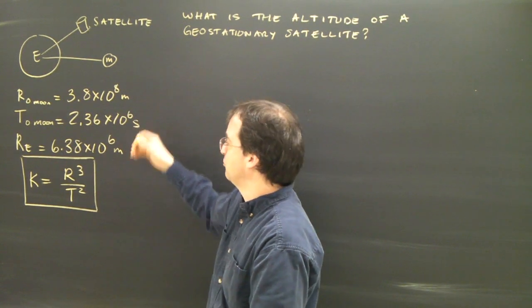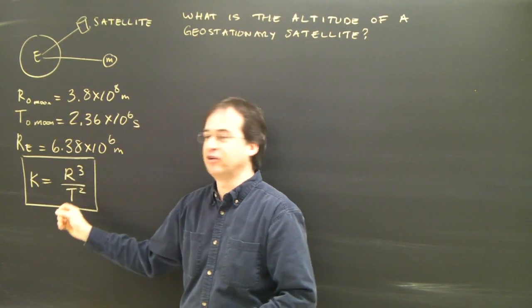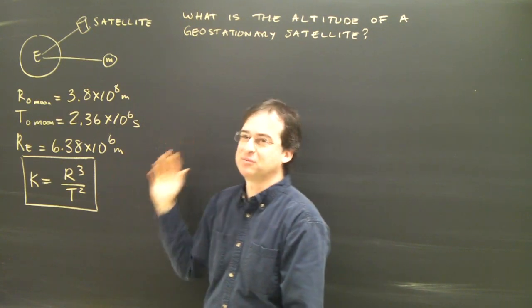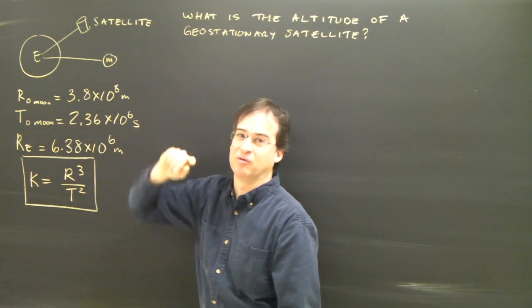So here we are in a situation where I could ask you, given K and R, could you find T? There are simple problems like that. But let's do something a little more complex. Here I have the Earth, and I have a satellite going around the Earth.